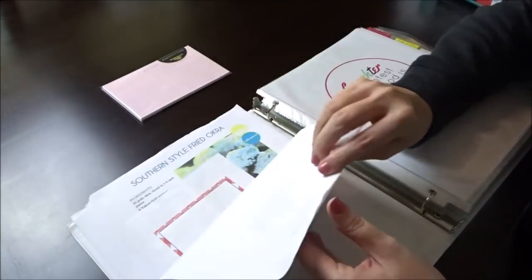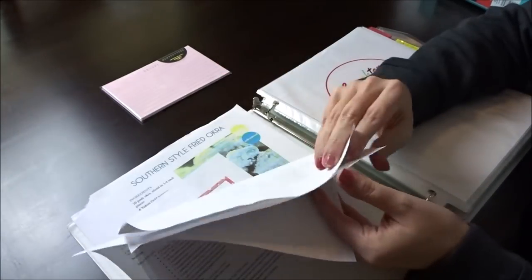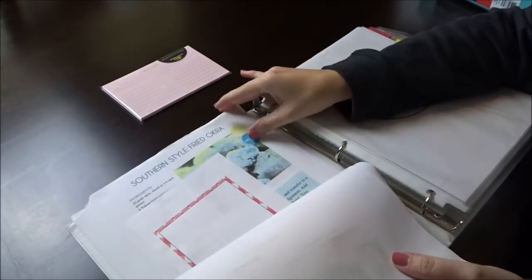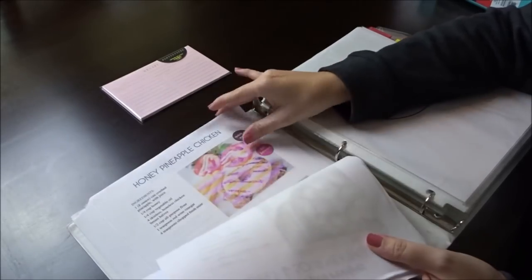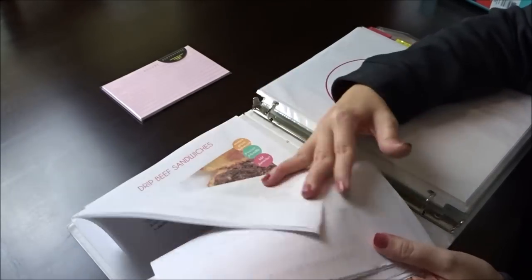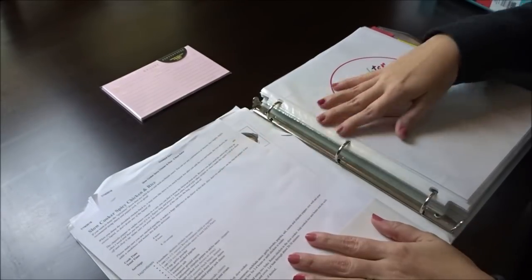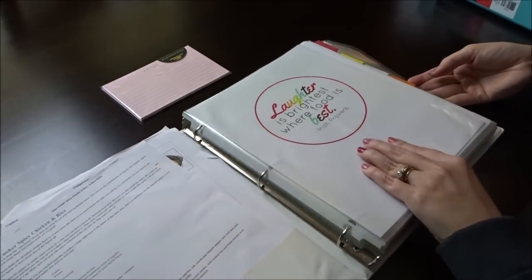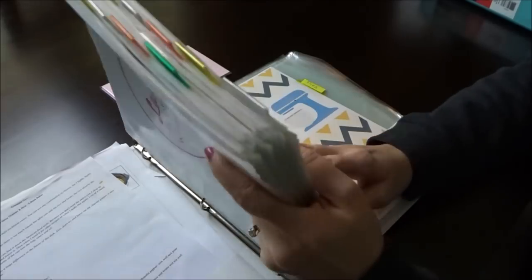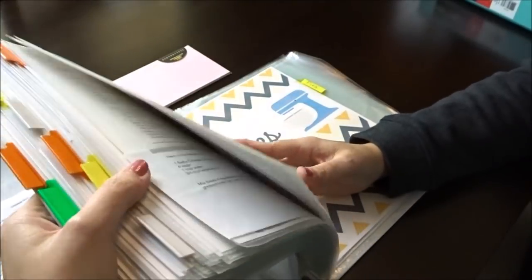In the front cover is where I print recipes that I want to try. Once we try them, if we love them, I will file them in the book. If we don't, I'll throw it away. But I have way too many, so I need to pare through those and figure out what I'm actually going to try, then throw away the ones we're not.